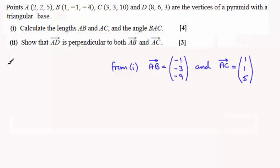So to get AD, let's just put it up here. AD then is OD minus OA. So if we subtract our values, then we've got 8 minus 2 which is 6, and then we've got 6 minus 2 which is 4, and then 3 minus 5 is minus 2. So that's our vector AD then.